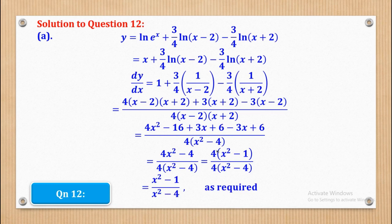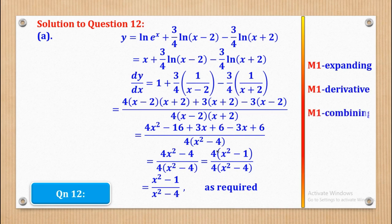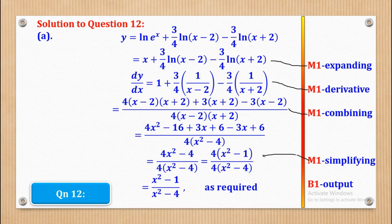Now let's see how marks can be awarded. M1 is for expanding to get the split form. The next mark is for differentiating. Then one mark is for combining and getting the LCM. Another mark is for simplifying, and the last mark is for the final output. That's how the 5 marks come about in part A.